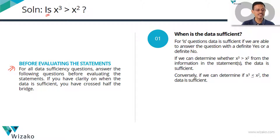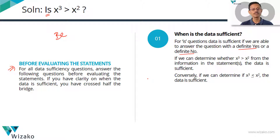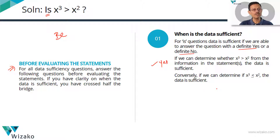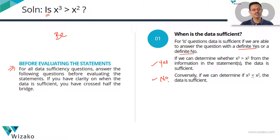An 'is' question — any question that starts with a be-verb like 'is,' 'does,' or 'will' — will have yes or no as the answer. Your answer should be a definite yes or a definite no. If we can conclude that yes, X cubed is greater than X squared, then the data is sufficient. Conversely, if you can deduce uniquely, without any doubt, that X cubed is either less than or equal to X squared, then you can give a definite no. Whether it's a definite yes or a definite no, as long as it is definitely one of the two, the data is sufficient.